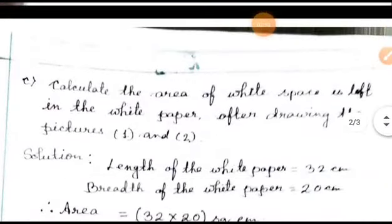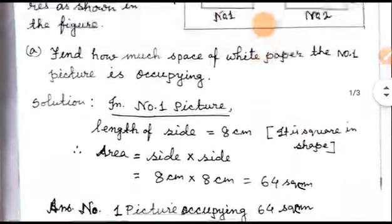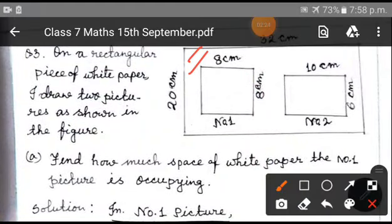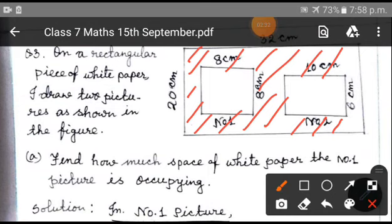Next, the question is: calculate the area of the white space that is left in the white paper after drawing the two pictures. So here you will have to calculate the area excluding the square and the rectangle — that means this remaining space. How can you calculate this area? Simply, you will add the areas of the square and the rectangle and then subtract it from the area of the bigger rectangle.